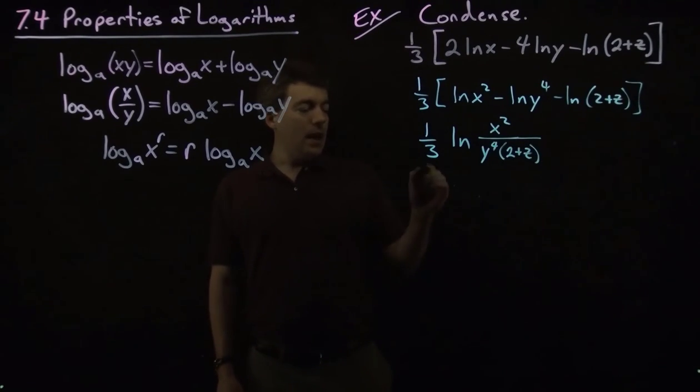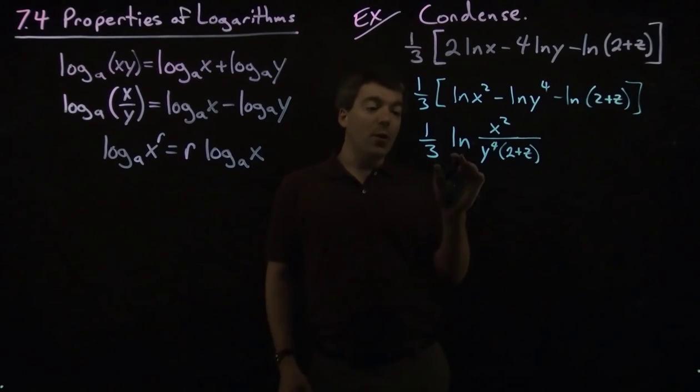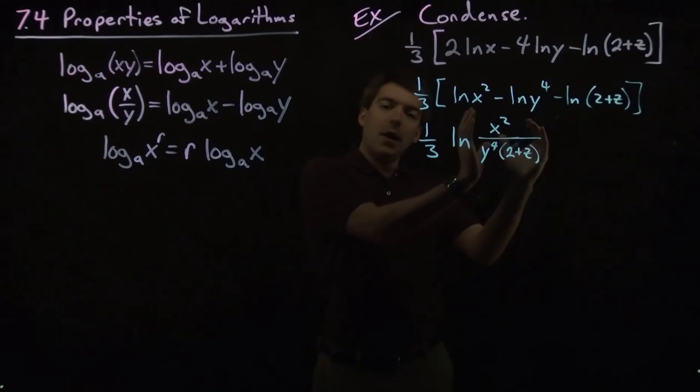All right, and now we have a one-third as a coefficient of this logarithm. Again, we can use this power property to put this as an exponent of everything in the argument.